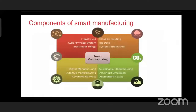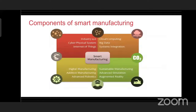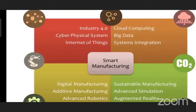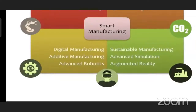These are all part of the historical development of smart manufacturing. The components of Industry 4.0 include cyber physical systems, Internet of Things, cloud computing, big data, and system integrations. Also included are digital manufacturing, additive manufacturing, advanced robotics, sustainable manufacturing, advanced simulation, and augmented reality. These are all major components of smart manufacturing.